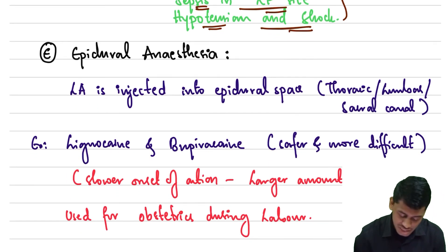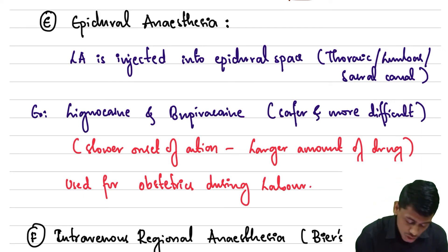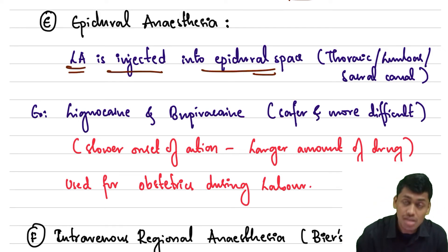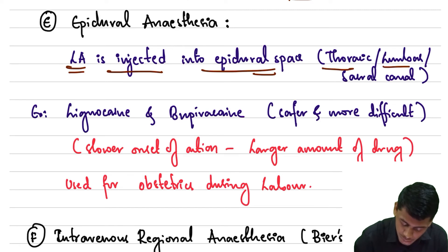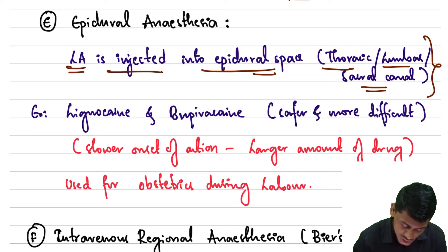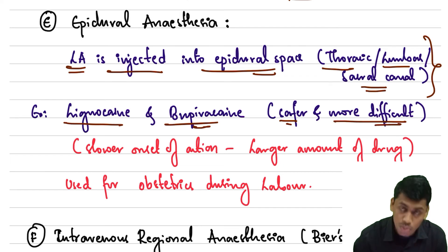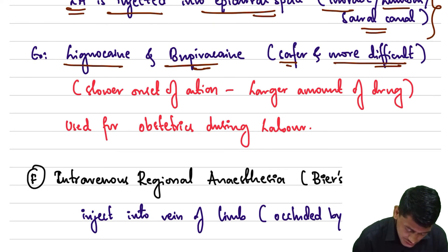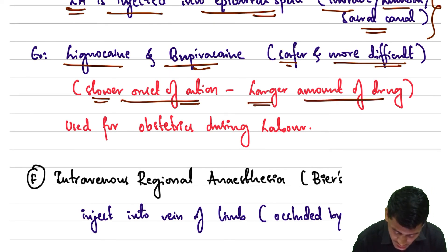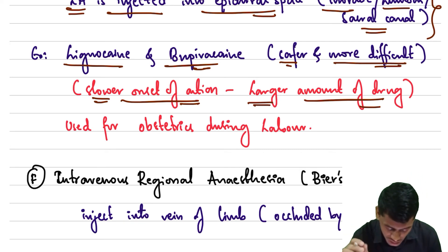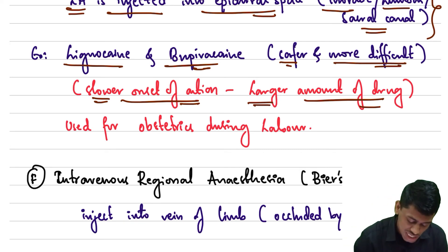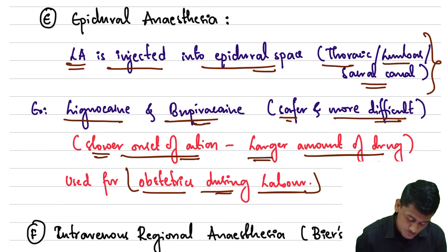In epidural anesthesia, the local anesthetic is injected into the epidural space — either thoracic, lumbar, or sacral canal. We can use lignocaine and bupivacaine. It is safer but comparatively more difficult than spinal anesthesia. There is a slower onset of action, so a larger amount of drug is required. Epidural anesthesia is particularly used in obstetrics during labor.